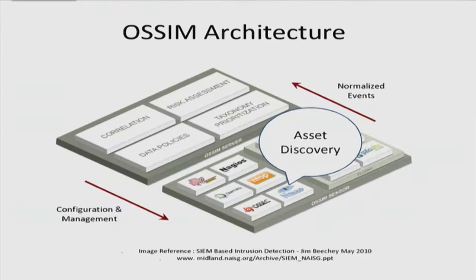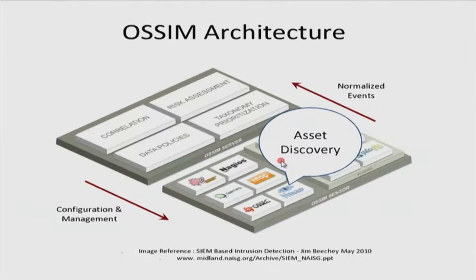This slide shows the basic architecture of OSSIM, where you can see that many open source software tools are integrated to meet the SIEM requirements — data policies, correlation of logs, risk analysis, and taxonomy. Once OSSIM is installed in your system, it needs to detect the pre-existing systems connected — how many systems and routers are connected, basically the components of the network. It uses NMAP for asset discovery. Assets are simply your systems and routers connected in the network where OSSIM is installed. NMAP is open source and widely used for asset discovery.